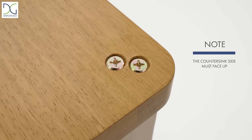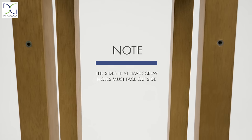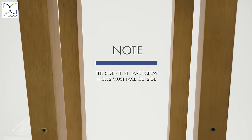The countersink side of the top panel must face up. The sides that have screw holes on each pole must face the outside.